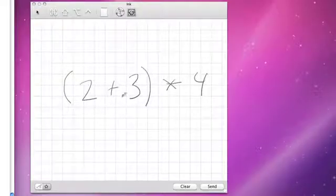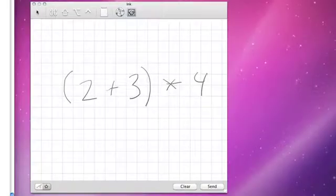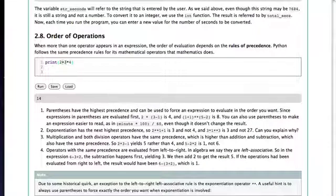So 2 plus 3 is 5, 5 then multiplied by 4 should give us 20. If we go back over to our active code window and put some parentheses in here, so 2 plus 3, the result of that multiplied by 4. When I run now, I see that the result is 20.